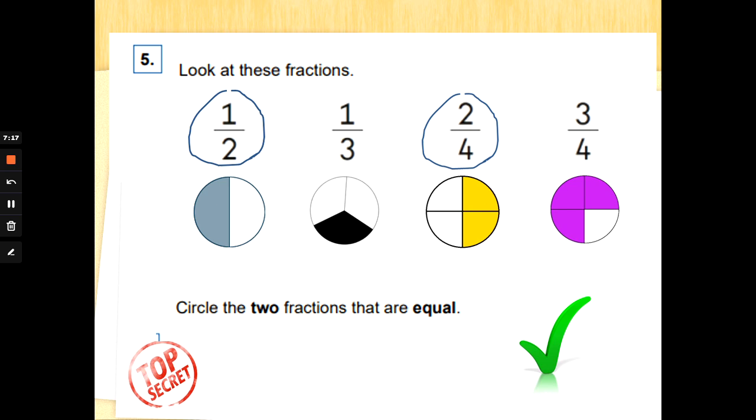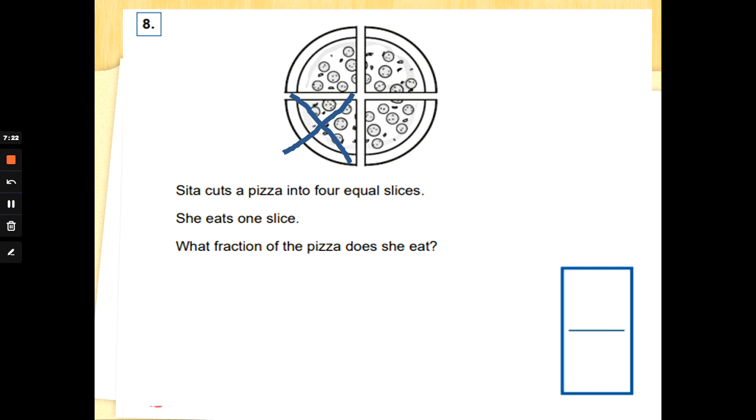Number eight. Sita cuts the pizza into four equal slices. So she's cut the pizza into quarters. She eats one slice. What fraction of the pizza does she eat? The biggest number of a fraction, the bottom number, the denominator, is how many pieces of pizza there are all together. Sita cuts the pizza into four parts. So the bottom number is going to be a four. She eats one piece. How many pieces did she eat? That's a one. We've put that at the top of the fraction. She has eaten one quarter of the pizza.